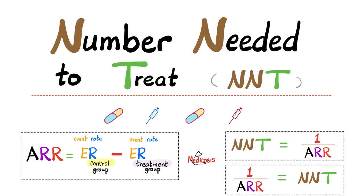In the last video, we talked about the absolute risk reduction. Today we shall talk about the multiplicative inverse of the absolute risk reduction, which is known as the number needed to treat — meaning how many people need to be treated in order for one of them to benefit.